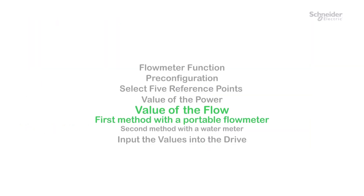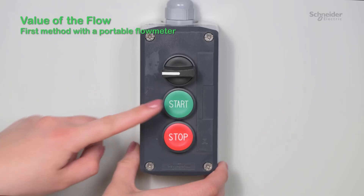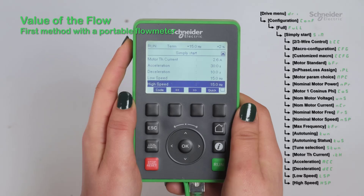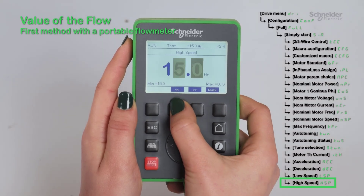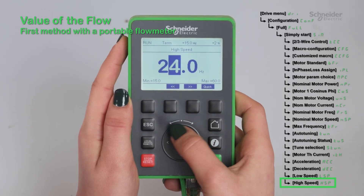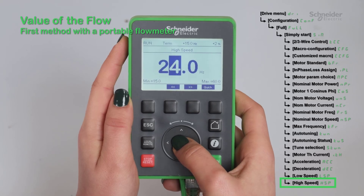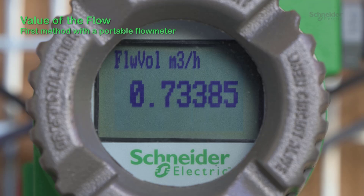Value of the Flow — First method with the Portable Flow Meter: you will need a Portable Flow Meter used to calibrate the function in 5 points. If you don't have a Portable Flow Meter, use the second method. Start the motor. Go to Simply Start. Set High Speed to 15 Hz, 24 Hz, 33 Hz, 41 Hz, and 50 Hz. Take the value of the Flow PCQ from the Portable Flow Meter for each point. At the same time, you can take the power value.